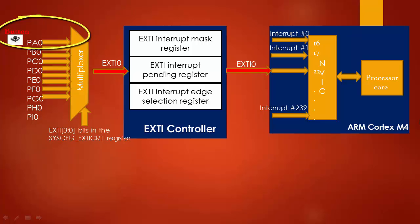Here you can see the button is connected to PA0, that is Port A's 0th pin, which actually issues the interrupt to the processor over the EXTI0 line in an STM32F4XX based microcontroller. This we just saw in our previous video.